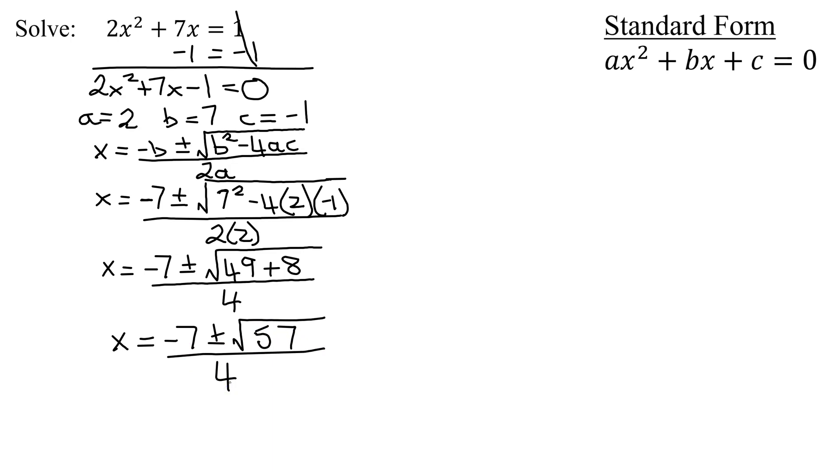Now the only thing left to do is can I simplify anything? Can you simplify the square root of 57? Let's look at 57. It's not divisible by 2, but it's definitely divisible by 3. 3 divides into 57 19 times. Both of these are prime numbers, therefore I cannot simplify the square root of 57.